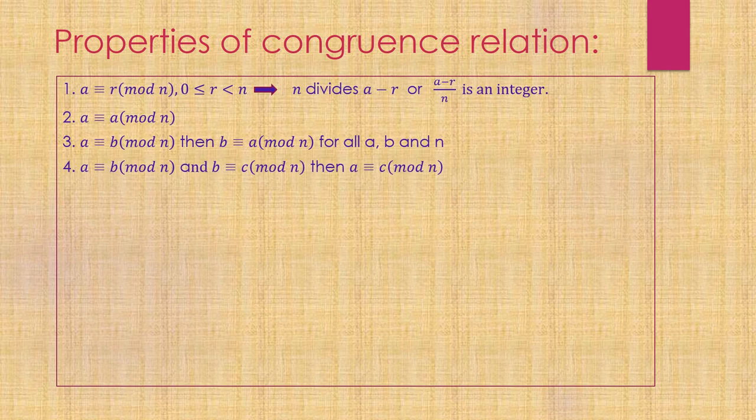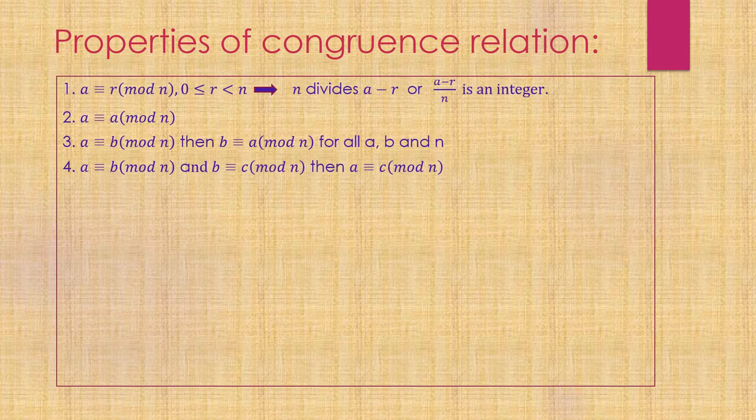Transitivity: If a and b follow congruency relation, and b and c follow congruency relation, then a and c also follow congruency relation. That means a is congruent to c modulo n.